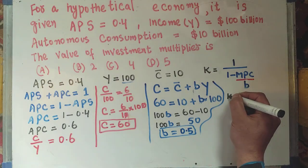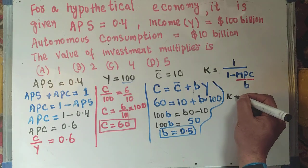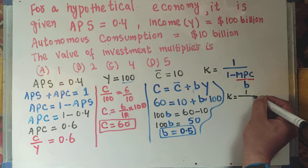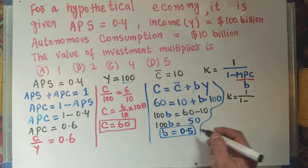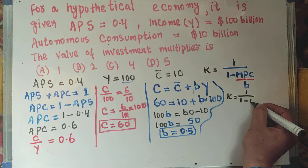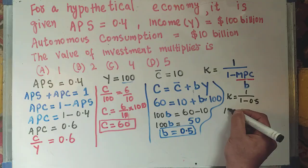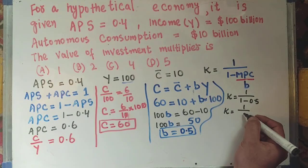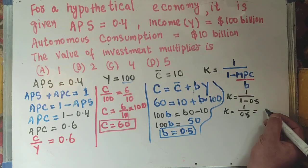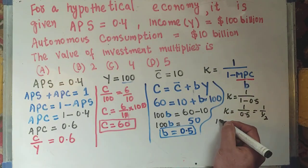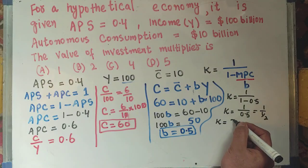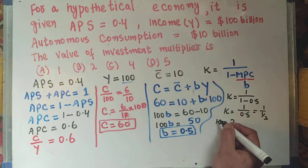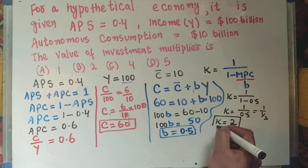Now we can find out the investment multiplier. K = 1 divided by (1 minus MPC) = 1 divided by (1 minus 0.5) = 1 divided by 0.5 = 1 divided by (1/2) = 2. So the value of the investment multiplier is equal to 2.